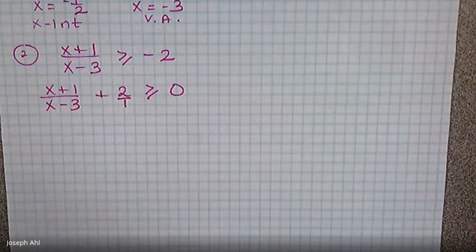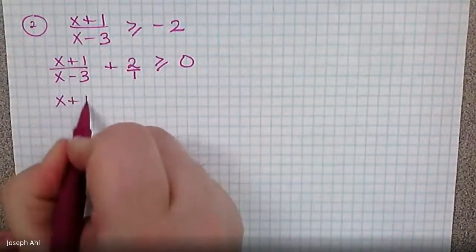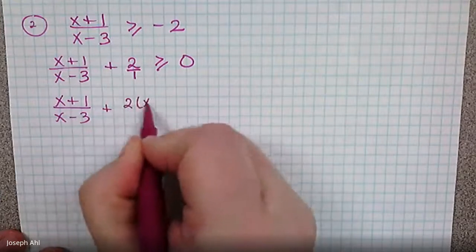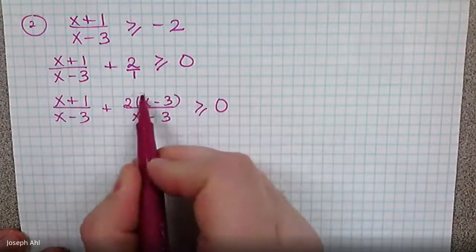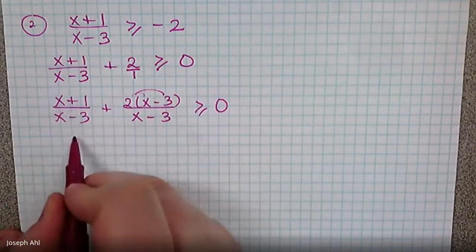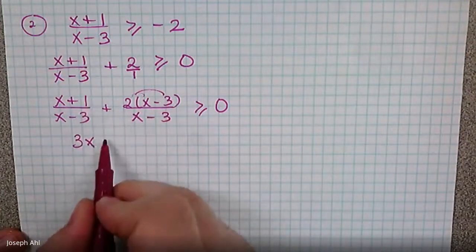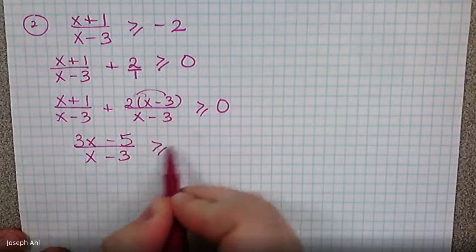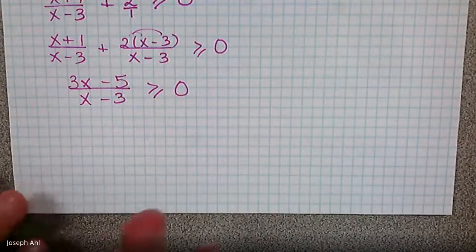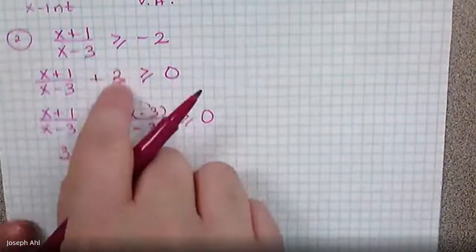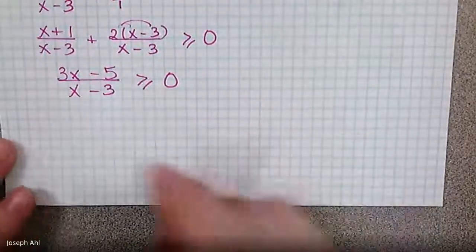Write two as two over one and add them by finding a common denominator. Multiply two by x minus three on top and bottom to establish the common denominator. Distributing gives two x on top; combined with the one x we get three x, and negative six plus one gives minus five. So we now have three x minus five over x minus three, greater than or equal to zero — this is the inequality we'll find critical values for.